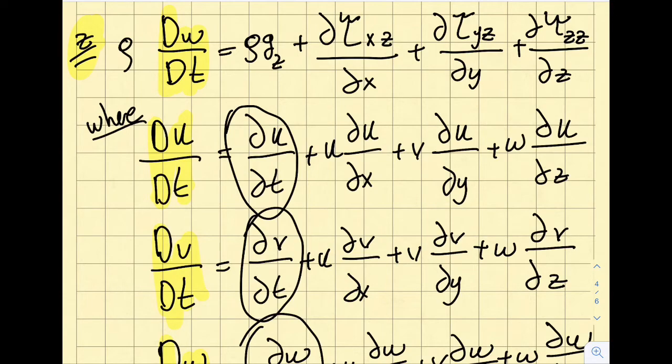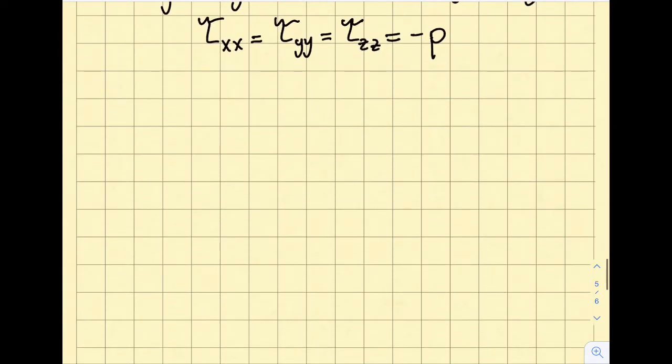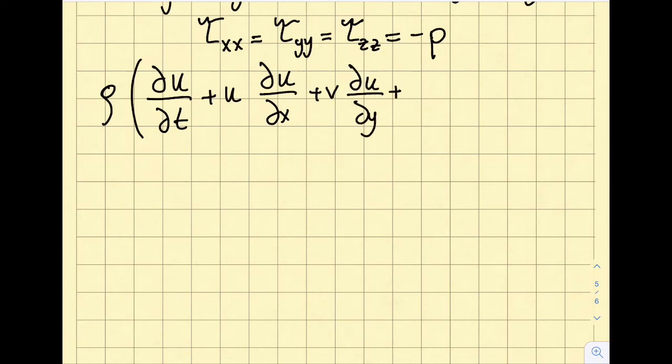The equations look much simpler. ∂u/∂t + u∂u/∂x + v∂u/∂y + w∂u/∂z equals ρgx - ∂p/∂x. I'm writing my acceleration in the x-direction at this point in time.